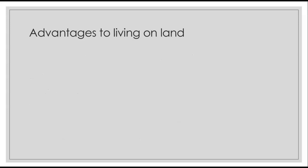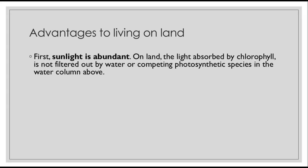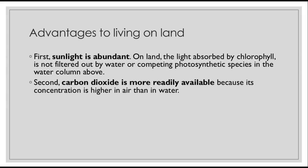Those are the disadvantages. Now let's talk about the advantages. The first is that sunlight is abundant. On land, the light absorbed by the green pigment chlorophyll doesn't get filtered out by water or competing photosynthetic species in the water column above — it just comes right down to the plant. Second, carbon dioxide is more readily available because its concentration is higher in the air than in the water.